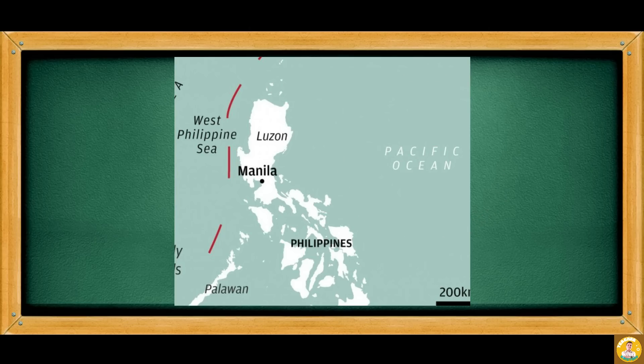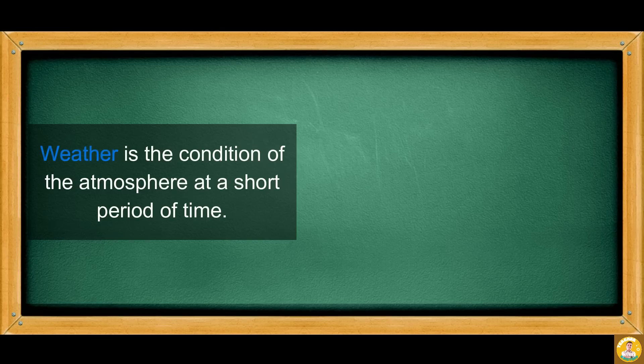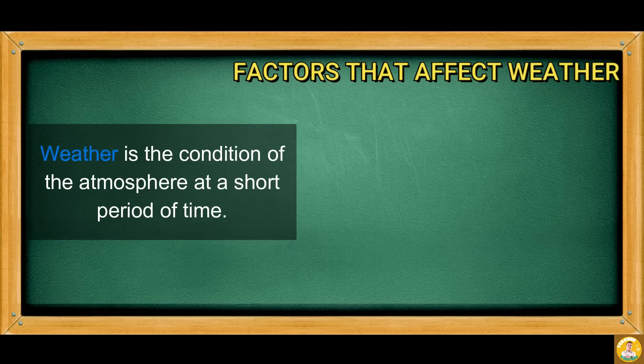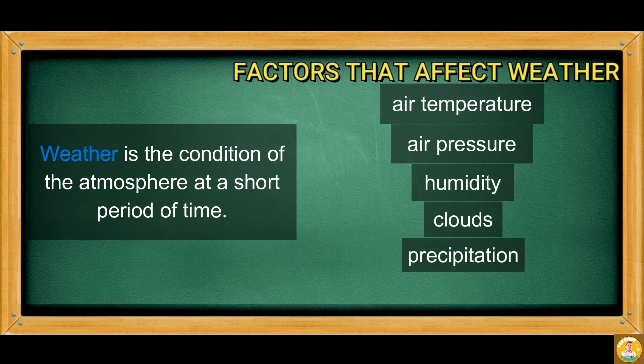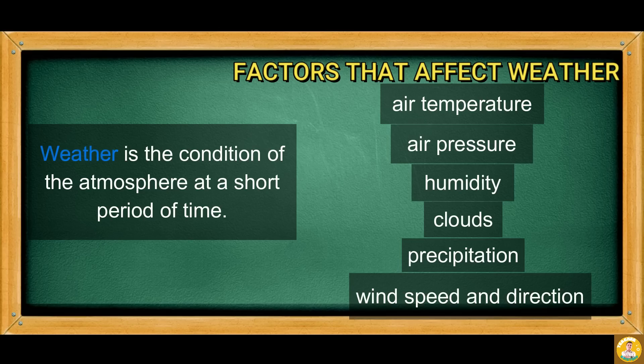The typhoon is just one of the many weather disturbances we experience. Look at the sky — can you tell what the weather is? Weather is the condition of the atmosphere at a short period of time. The different factors that affect weather include air temperature, air pressure, humidity, clouds, precipitation, and wind speed and direction.